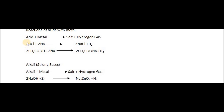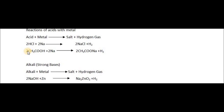The balanced equation is: 2HCl + 2Na → 2NaCl + H₂. Another example uses acetic acid (ethanoic acid, CH₃COOH). The hydrogen in acetic acid is displaced by sodium, and when displaced, it is released as hydrogen gas. The product is sodium acetate, which is a salt, and hydrogen gas is released. So reactions of acids with metals give salt and hydrogen gas. HCl is a strong acid, while CH₃COOH (acetic acid or ethanoic acid) is a weak acid, but both release hydrogen gas when reacting with metals.